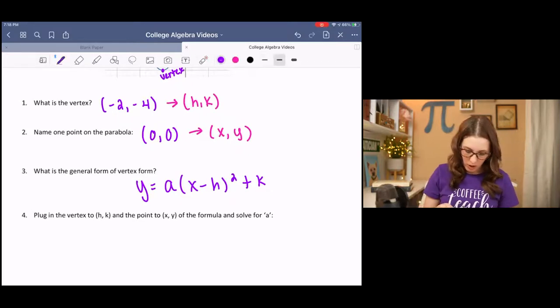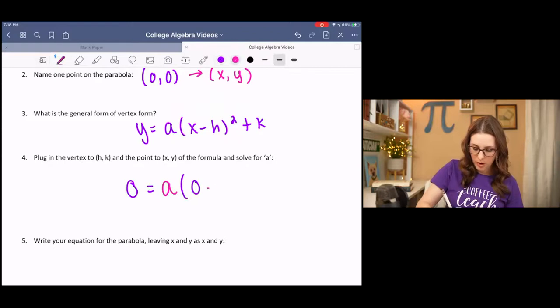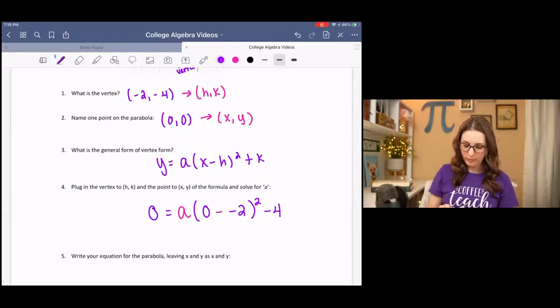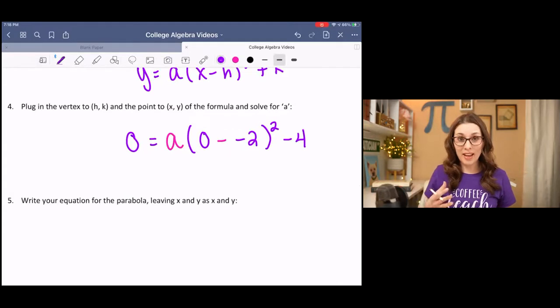And we are going to plug in the information we have. We know that y is 0, x is 0, minus is part of the formula, h is negative 2, and k was negative 4. Then we have an equation with a. It's only one variable, so we can easily solve this equation.